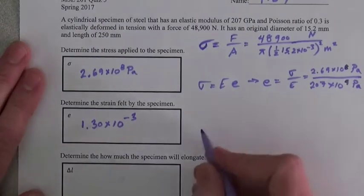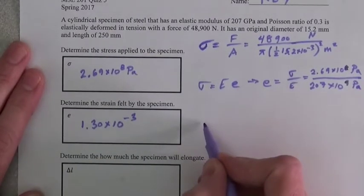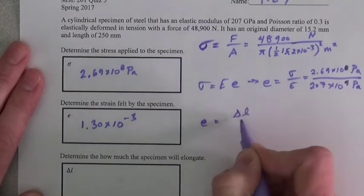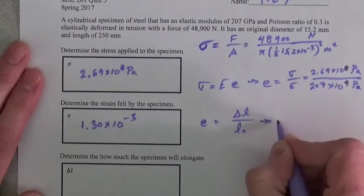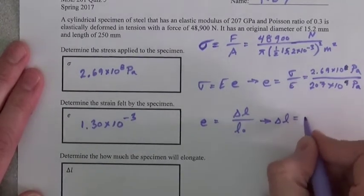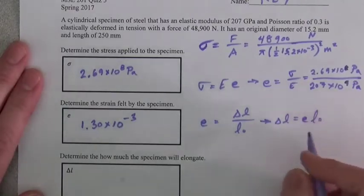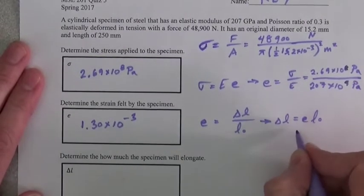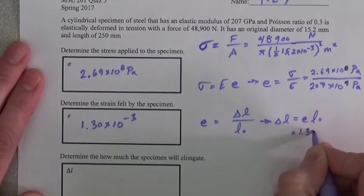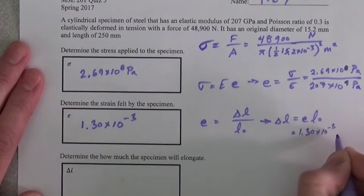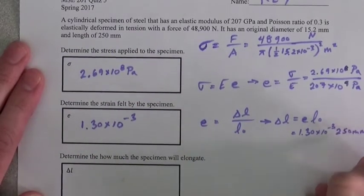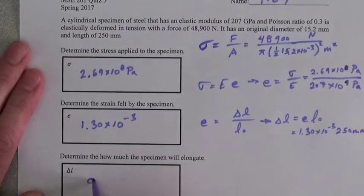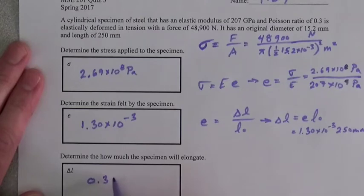Determine the elongation. So ε is equal to ΔL over L naught, which gives us that ΔL is equal to ε L naught, which is equal to 1.30 times 10 to the minus 3 times 250 millimeters, which gives us 0.325 millimeters.